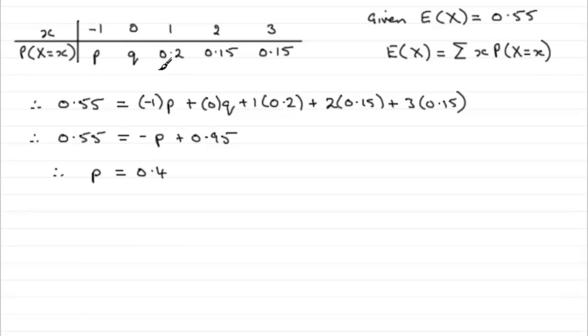So, how do we get q? Well, we should know that the sum of all the probabilities comes to 1. So, we could put something like also here, we know that p, which is 0.4,